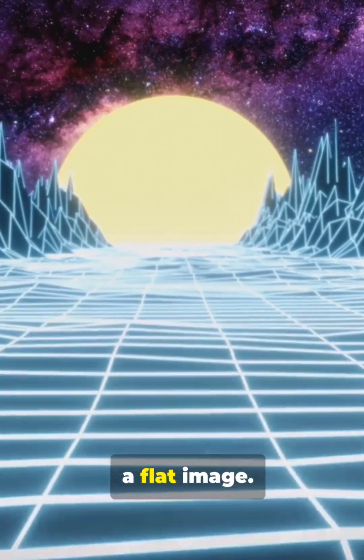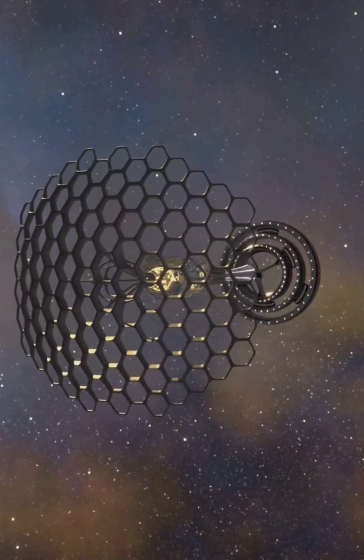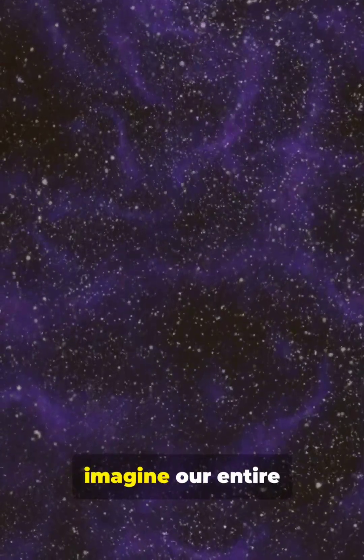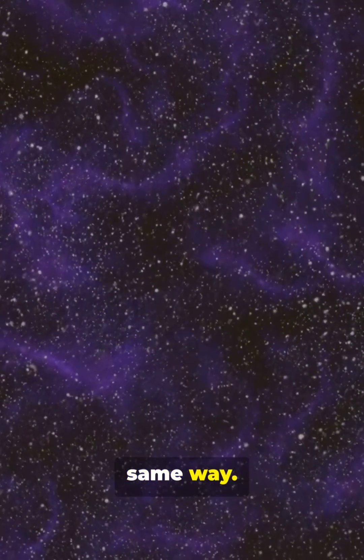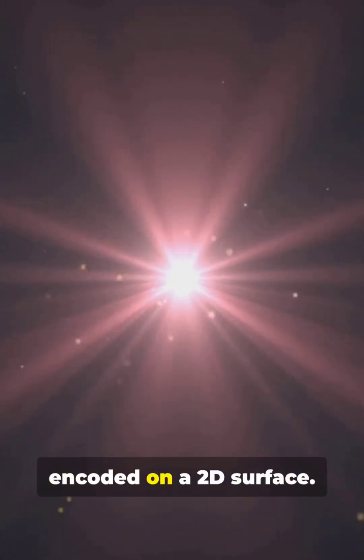Imagine a hologram, a flat image. It looks 3D from the right angle. Now imagine our entire universe works the same way. What we experience as 3D space is actually information encoded on a 2D surface.